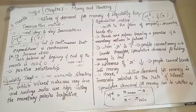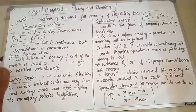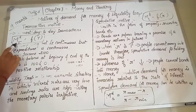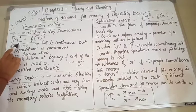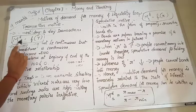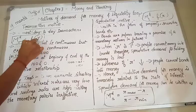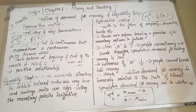So transaction motive means here we need money to carry out our day-to-day transactions. Now, when we write it in the functional form, equation form, we write it like the demand for money, DM, demand for money under transaction motive T. So DMT is equal to what? Function of Y. Y means income. In economics, the term income is represented by Y.